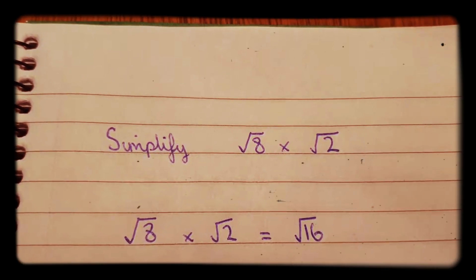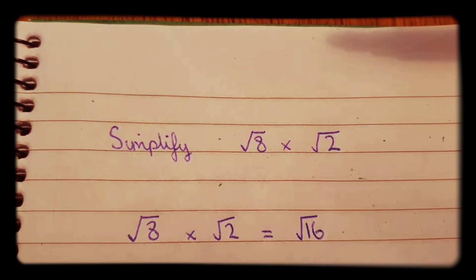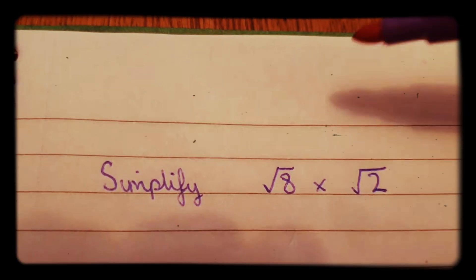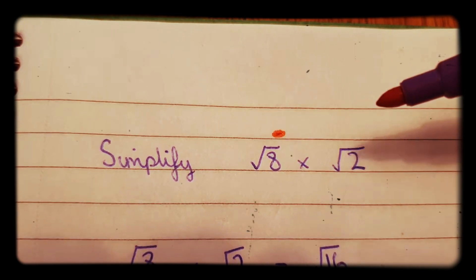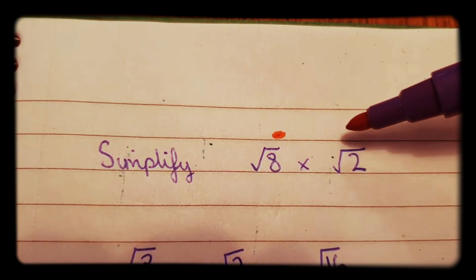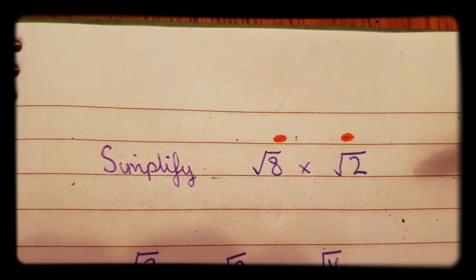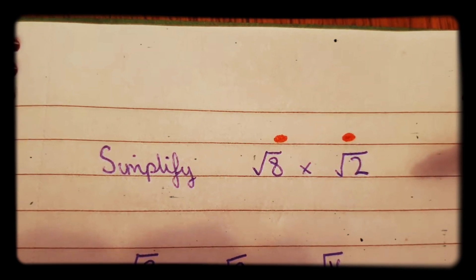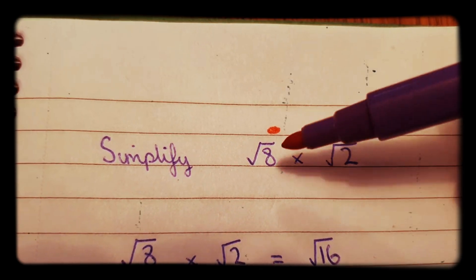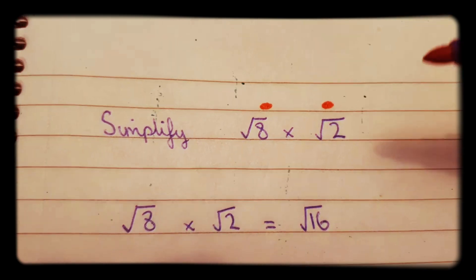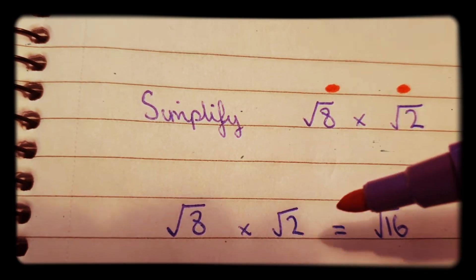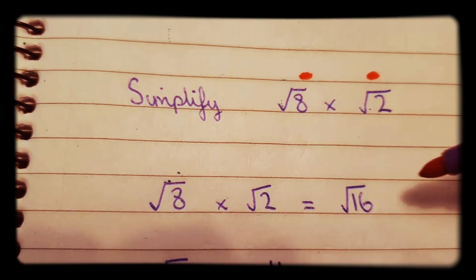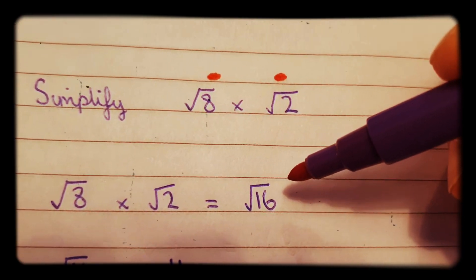In this video we're going to be simplifying surds. So the question is: simplify root eight times root two. What you do is you just times these two things together. Root eight times root two makes root 16.